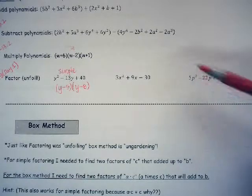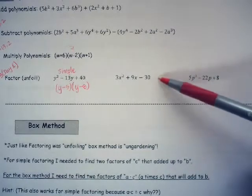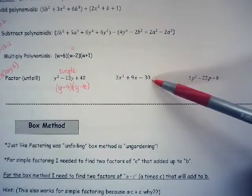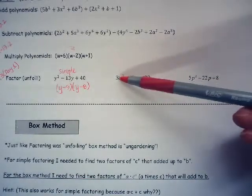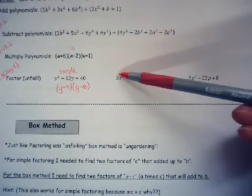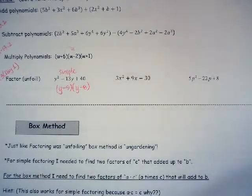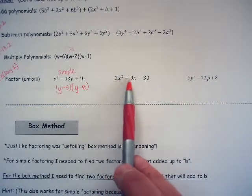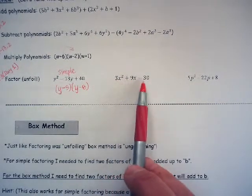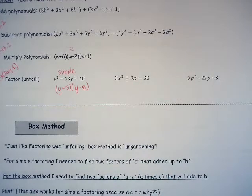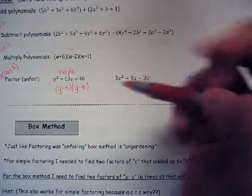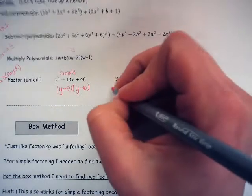The second easiest method is when the first coefficient — the number in front of x squared — is not 1. So the first thing I check is: is there a greatest common factor, something I can pull out of every number? And there is — it's 3.